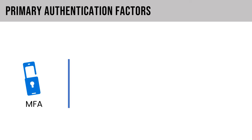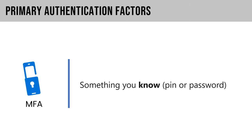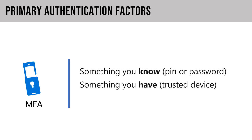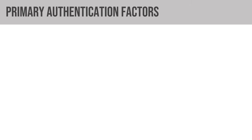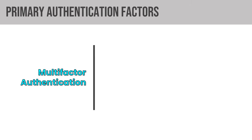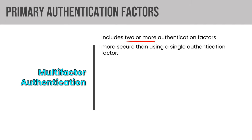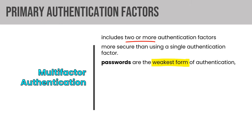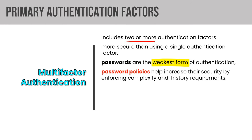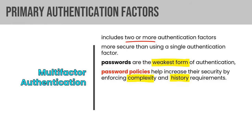Primary authentication factors: something you know, like a PIN or password; something you have, like a trusted device; and something you are, like a fingerprint or retina scan. Multi-factor authentication leverages two or more of these components and is more secure than a single factor. Remember that passwords are considered the weakest form of authentication, but password policies can help by enforcing complexity and history so we don't have weak or reused passwords.